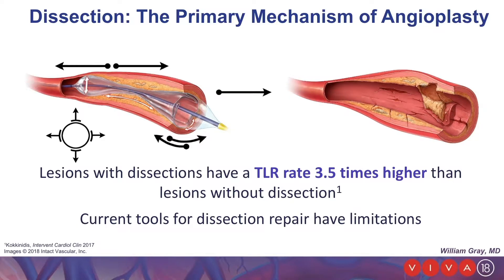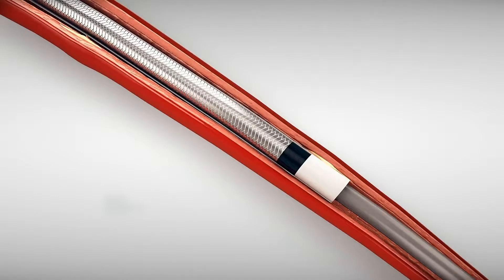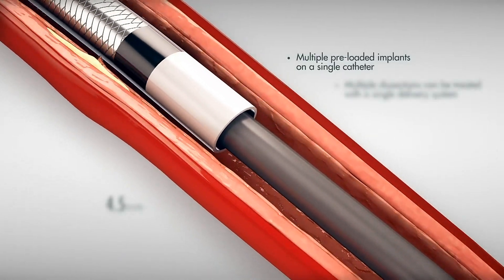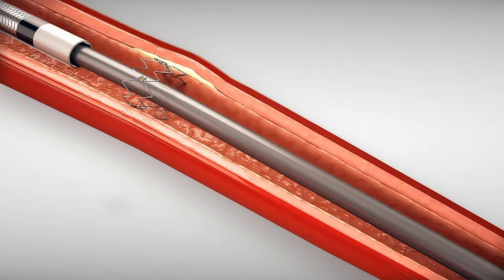We know that lesions with dissections have a TLR rate 3.5 times greater than lesions without dissection, so dissection has an implication for long-term outcome. The current tools for dissection repair have limitations. The TAC and Devastro system was specifically designed to address the stent drawbacks that we use today to treat dissection with novel designs. Specifically, it's a 6-millimeter deployed-length self-sizing nitinol device, which fits vessel diameters between 2.5 millimeters and 6 millimeters. It has a unique anchoring mechanism which minimizes migration during deployment, and there are gold markers for visibility. In this animation, you're going to see the TAC deployed in increasing vessel size from a single device, and you can see the TACs fit the vessel that they're being implanted into quite easily.